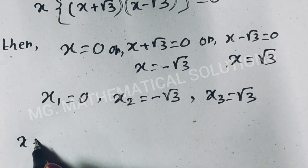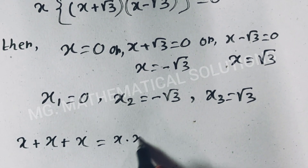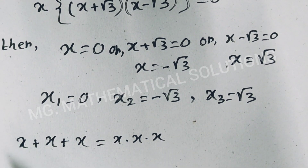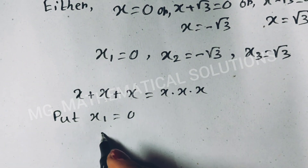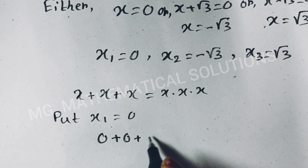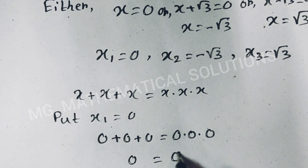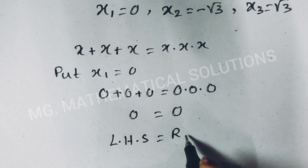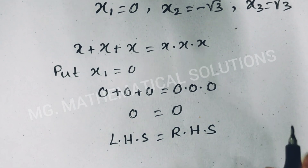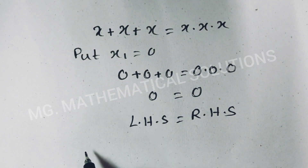We check x plus x plus x equals x times x times x. Putting x₁ equals 0: 0 plus 0 plus 0 equals 0 times 0 times 0, so 0 equals 0. Left hand side equals right hand side, so x₁ equals 0 satisfies the equation.